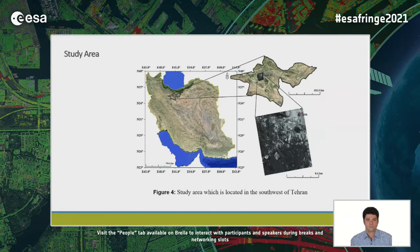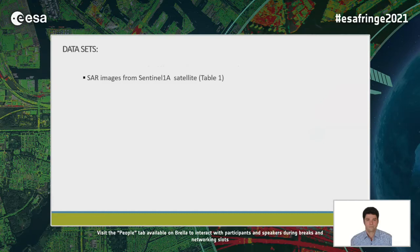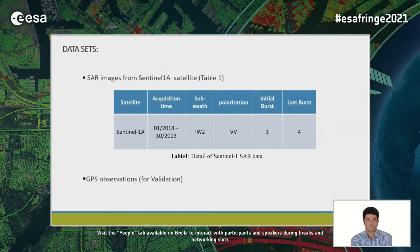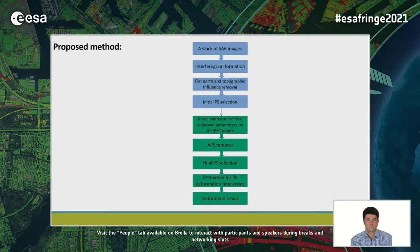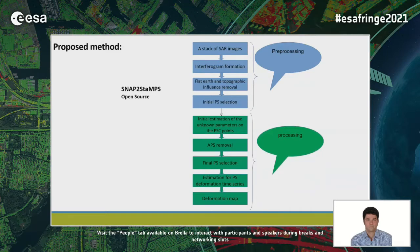The study area is located in southwest of Tehran, the capital city of Iran. To survey land deformation, we use Sentinel-1 SAR imagery and GPS observation for validation. The proposed workflow uses SLC data as input and produces a deformation map. I divided this flowchart into two parts: preprocessing using SNAP2STAMPS Python code, and processing using STAMPS MATLAB code, followed by validation with permanent GPS data and interpretation with geological data.